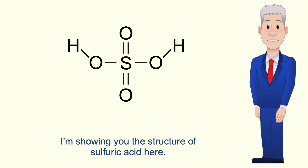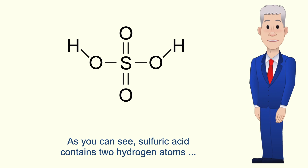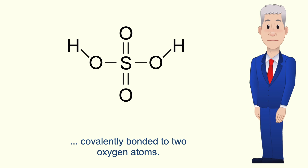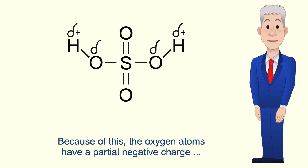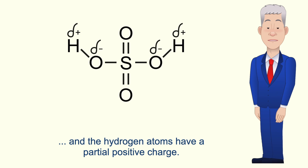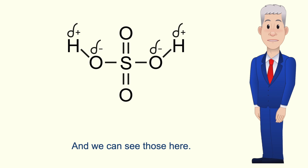In this video we're looking at the electrophilic addition reaction between alkenes and concentrated sulphuric acid. I'm showing you the structure of sulphuric acid here. As you can see, sulphuric acid contains two hydrogen atoms covalently bonded to two oxygen atoms. Remember that oxygen is a highly electronegative element. Because of this, the oxygen atoms have a partial negative charge and the hydrogen atoms have a partial positive charge, and we can see those here.